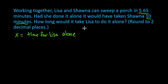And what we're going to do is set up a rate for each person. So we would have Lisa is going to be 1 over X because we don't know how long it's going to take her.